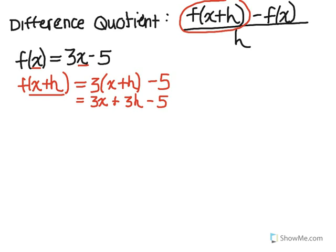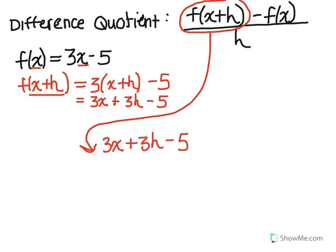And now we can actually plug it into the actual difference quotient. So the first thing we're going to plug in is f(x+h), which we just found to be 3x plus 3h minus 5.